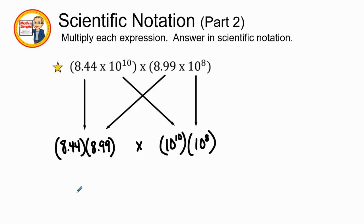So 8.44 times 8.99 gives us 75.8756 times 10 to the 10th power times 10 to the 8th power. Remember with the product rule, we're going to add those exponents. So we'll have 10 to the 18th power.